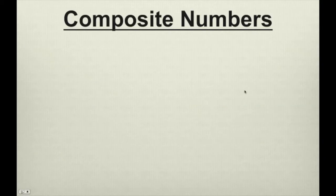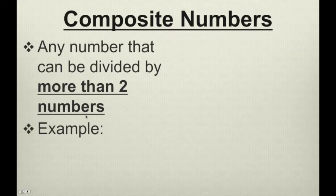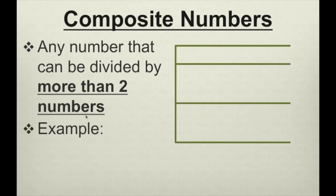Composite numbers are basically the opposite of prime numbers. A composite number is any number that can be divided by more than two numbers evenly. Let's take a look at some examples.